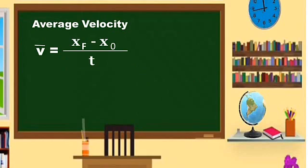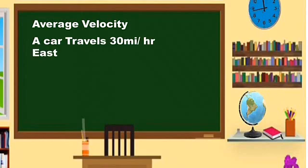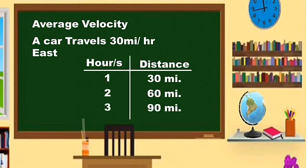The average velocity formula is equal to final distance minus the initial distance over time. An example of velocity: a car travels 30 miles per hour. It has a direction and a speed, so it is a velocity. It means that in 1 hour, a car can travel 30 miles. In 2 hours, this car can travel 60 miles. In 3 hours, this car can travel 90 miles.